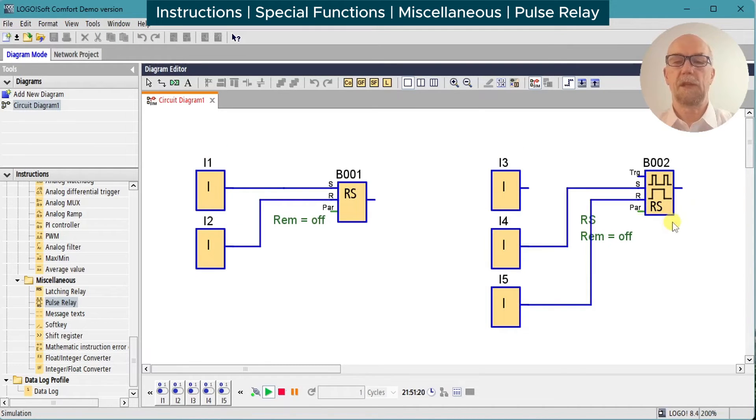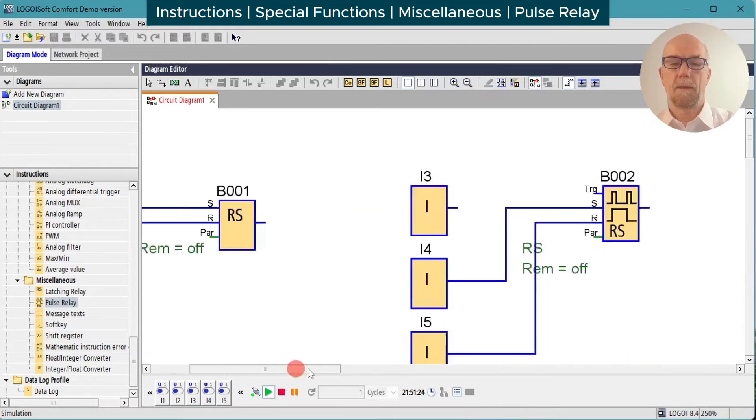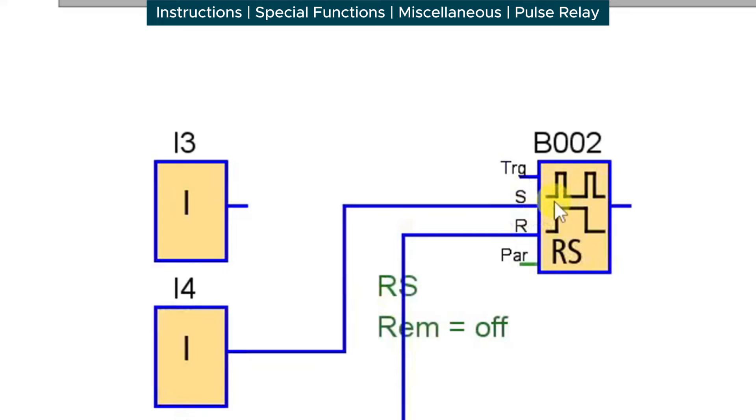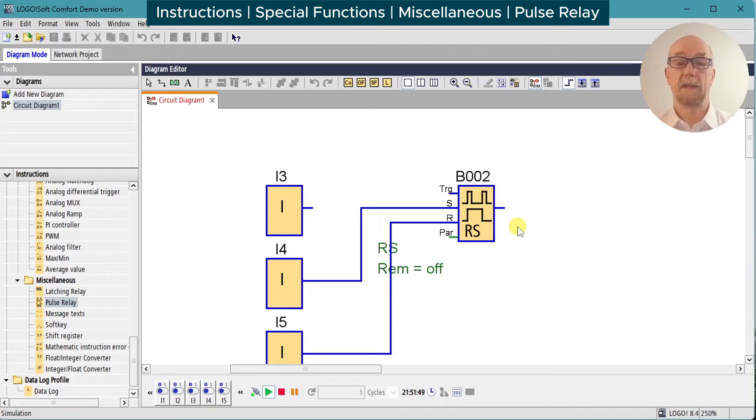The pulse relay symbol indicates there's a bit more to it. The trigger input, when it goes high, will turn the output on, and it will remain on when the trigger goes low. The next transition of the trigger from low to high will cause the output to turn low. So it's acting as a toggle, and this has many uses.